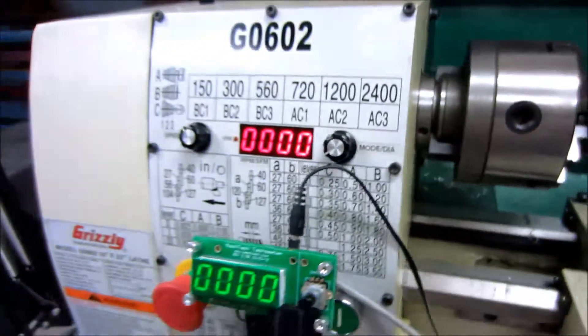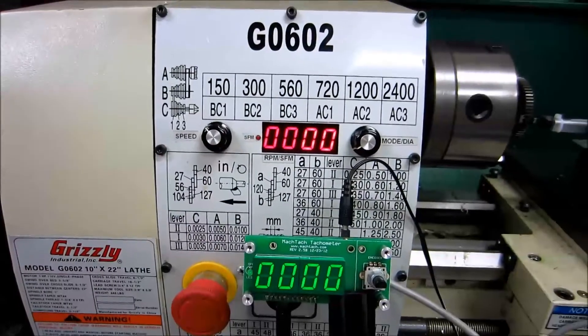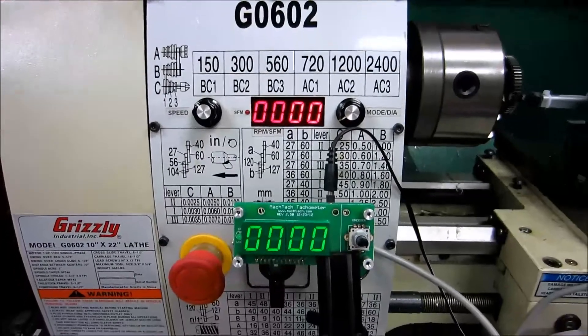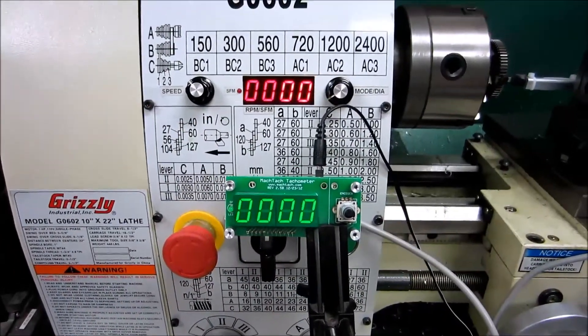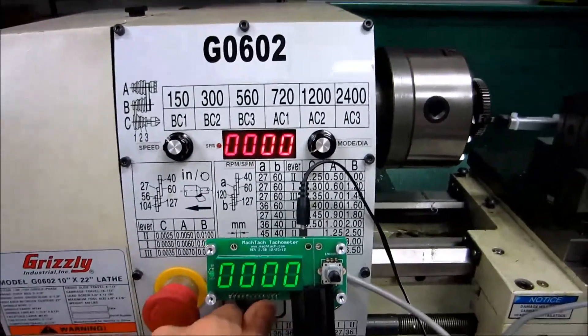And then what I've done over here is I have my normal MachTach that's IR reflective driven that's built into the lathe, and then I have a second MachTach here monitoring the gear tooth proximity sensor. So I'm going to go ahead and turn these on.